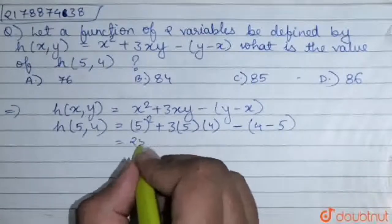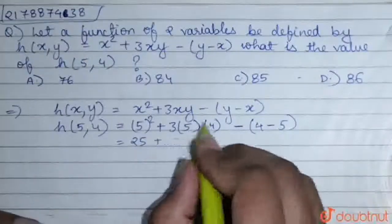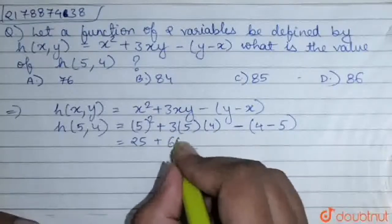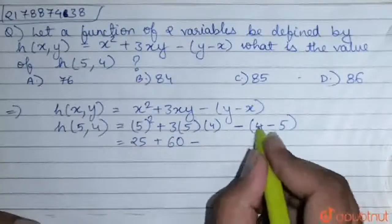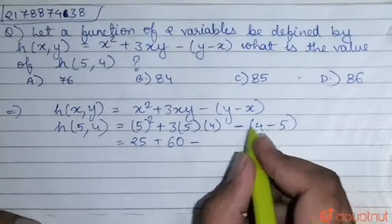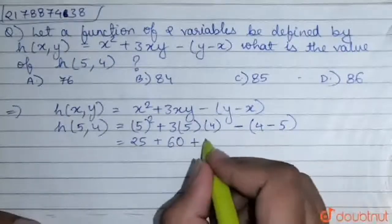This will be equal to 25 plus 3 into 5 into 4 will be 60 minus 4 minus 5 will be minus 1 and minus of minus 1 will be plus 1.